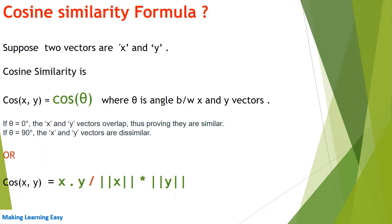Suppose we have two vectors x and y, so the cosine similarity would be: cos(x, y) is equal to cos(theta), where theta is the angle between vector x and y. If theta is 0, both the vectors overlap, meaning both are similar documents. If theta is 90, then both vectors or documents are dissimilar.